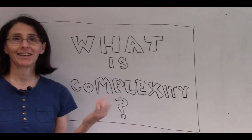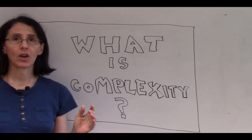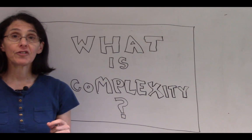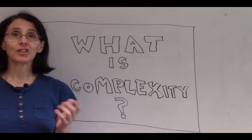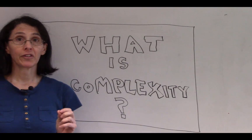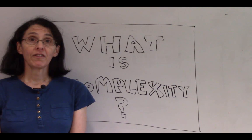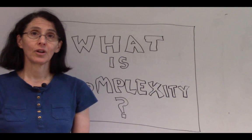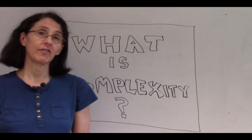Our first unit explores the question: what is complexity? As you'll see, this turns out to be a hard question to answer precisely. We'll start out very intuitively by giving a series of examples of the sorts of phenomena studied by complex systems scientists — a preview of the topics we'll cover. Then we'll list important properties common to most complex systems, briefly look at defining complexity, and survey the core disciplines, goals, and methodologies of complex systems research.